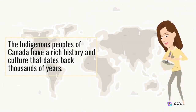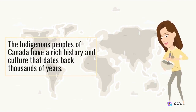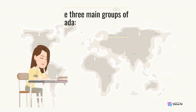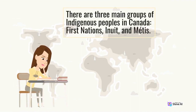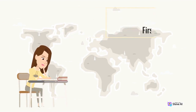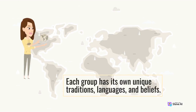The indigenous peoples of Canada have a rich history and culture that dates back thousands of years. There are three main groups of indigenous peoples in Canada: First Nations, Inuit, and Métis. Each group has its own unique traditions, languages, and beliefs.